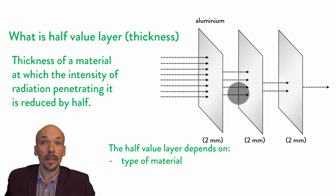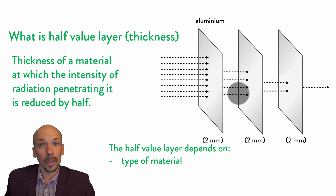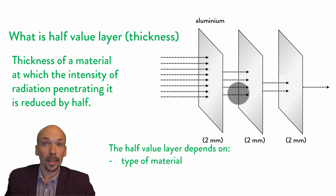The half value layer depends on a few factors. For instance, the type of material — now we used aluminium, but the half value layer of paper will be different.